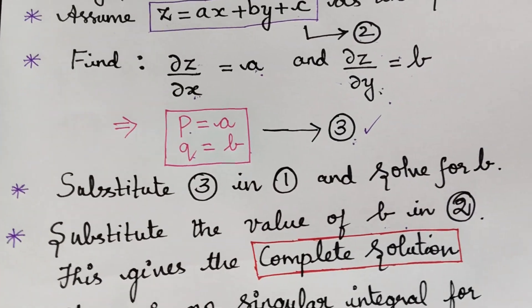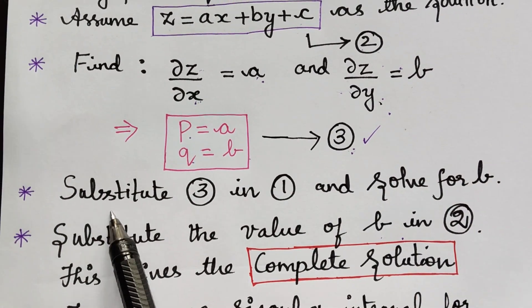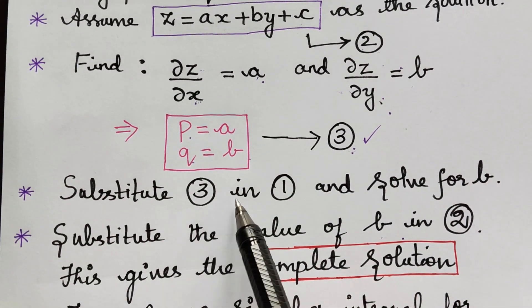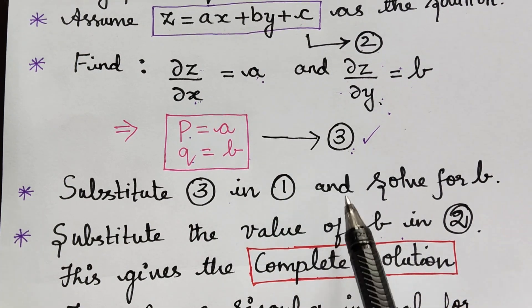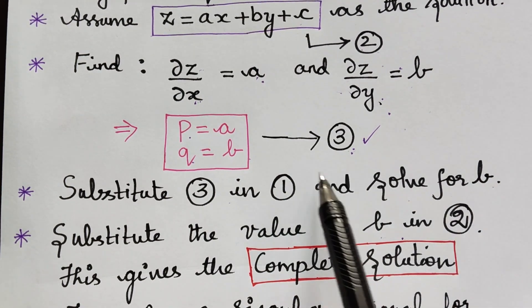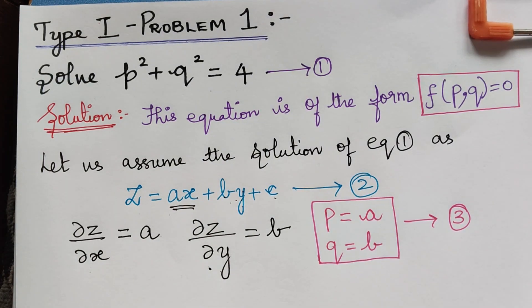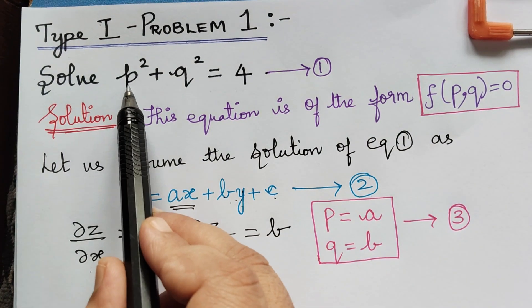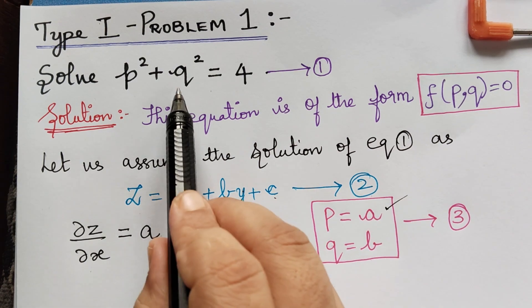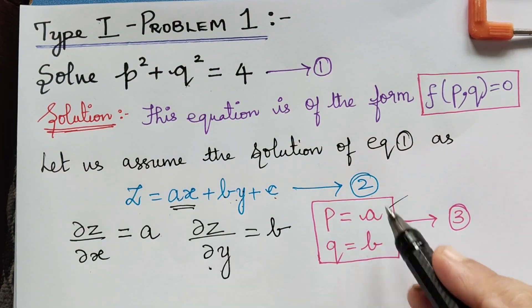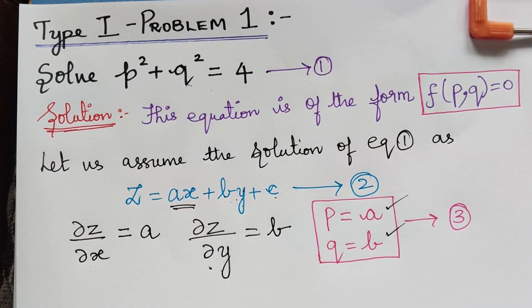The next step after getting equation 3 is to substitute equation 3 into equation 1 and solve for b. In equation 1, at the place of p we write a and at the place of q we write b. So substituting, a squared plus b squared equals 4, giving b squared equal to 4 minus a squared.